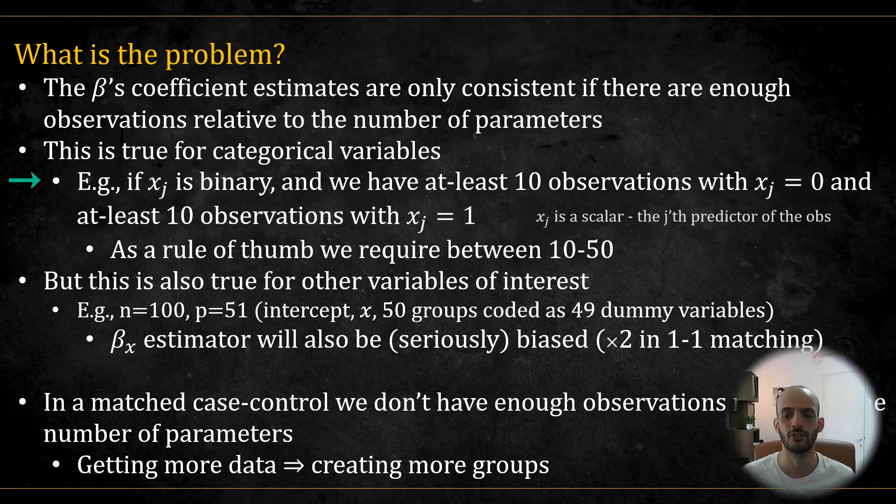For example, if x_j, the jth predictor, is binary, we usually require that we have at least a minimal amount of observations when x is equal to 1 and when x is equal to 0. And as a rule of thumb, you can think of between 10 to 50 overall cases where x_1 is equal to 0 and x_1 is equal to 1 to estimate the true coefficient. But it's also true for other variables of interest.